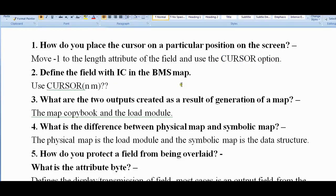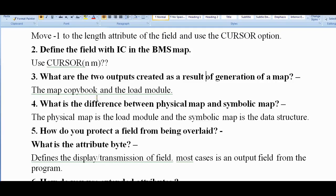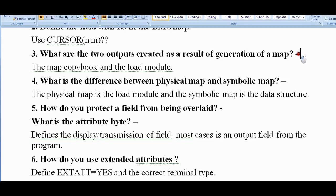What are the two outputs created as a result of generation of a map? Whenever you create a map, there are two outputs created - one is the map copybook and another is the load module.